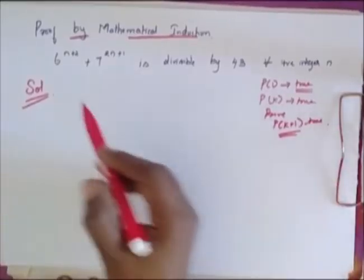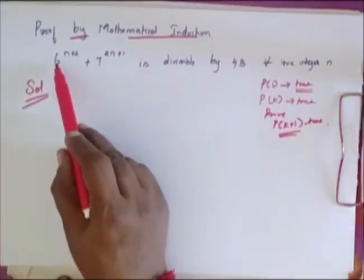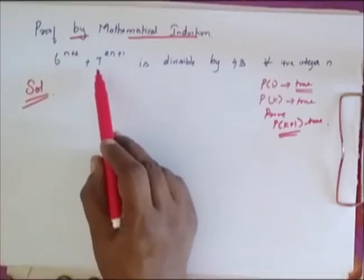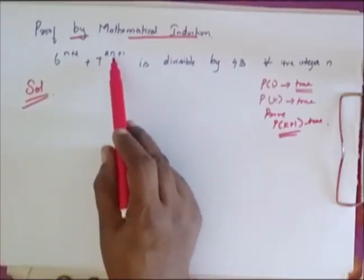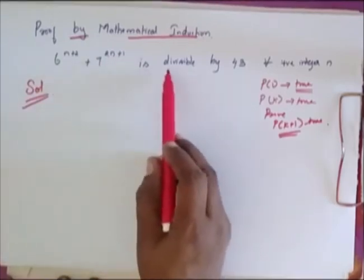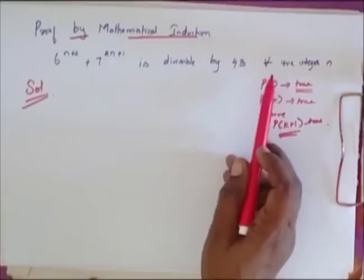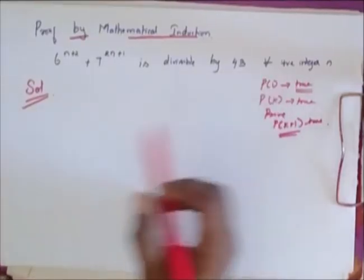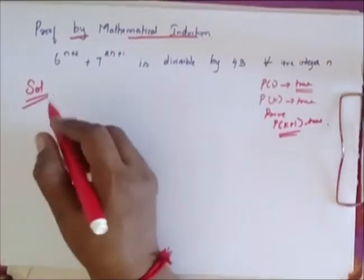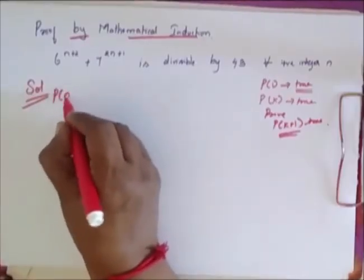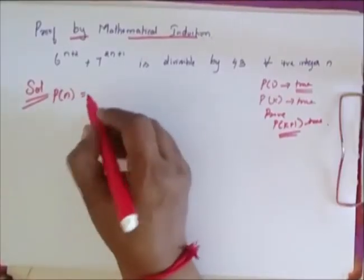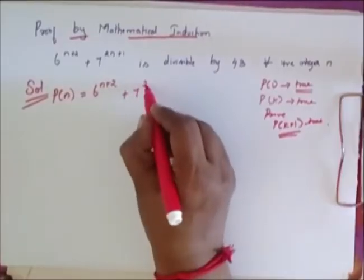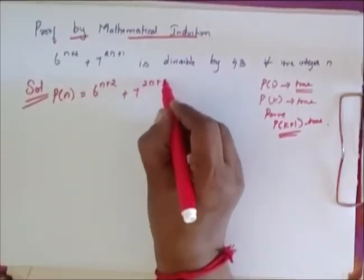The problem is: 6 power n plus 2 plus 7 power 2n plus 1 is divisible by 43 for every positive integer n. I consider P of n as 6 power n plus 2 plus 7 power 2n plus 1.